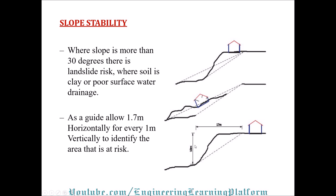This is also shown on the figure. If there is a 17-meter change in horizontal coordinate compared to the vertical coordinate, then the slope is at risk. For example, this slope is at risk as we have a horizontal of 17 meters and a vertical of 10 meters.